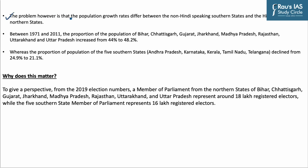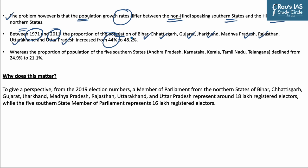The problem is that population growth rates differ between non-Hindi speaking southern states and Hindi speaking northern states. Between 1971 and 2011, the proportion of population of Bihar, Chhattisgarh, Gujarat, Jharkhand, Madhya Pradesh, Rajasthan, Uttarakhand, and Uttar Pradesh increased from 44% to 48.2%, whereas the proportion of the five southern states — Andhra Pradesh, Karnataka, Kerala, Tamil Nadu, and Telangana — declined from 24.9% to 21.1%.